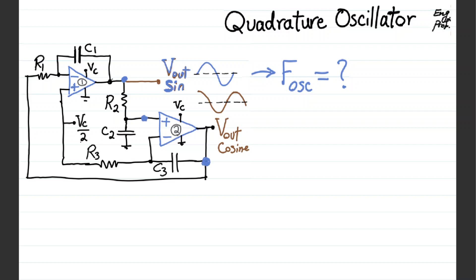The quadrature oscillator circuit is shown here, constructed using just two ideal op-amps and a single supply. The single supply is used for both op-amps, and Vcc/2 is used to bias the input terminals of the op-amps properly so that they can work on a single supply.